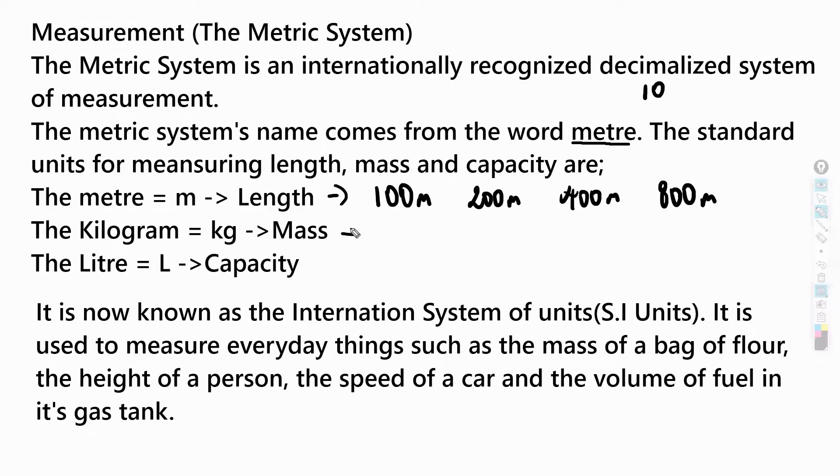For mass, we measure things in kilograms. The kilogram (kg) represents mass. For example, you might say you currently weigh 300 kilograms, which is really heavy, or you're going to buy one kilogram of rice when you go to the supermarket.